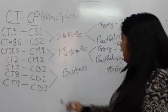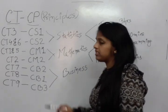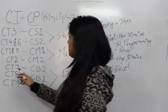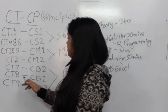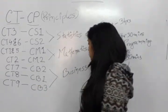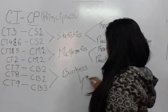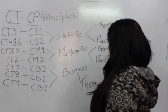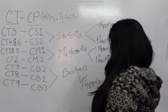Again, the Business paper that is CB2, CB1, and CB3. CB2 is the CT7 paper, CB1 is the CT8 paper, and CB3 is the CT9 paper. This paper only consists of Theory and is a 3 hours duration.